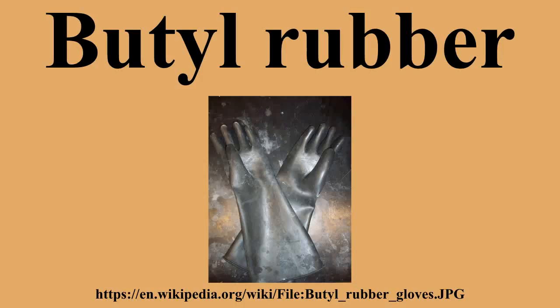Butyl rubber is a synthetic rubber, a copolymer of isobutylene with isoprene. The abbreviation IIR stands for isobutylene-isoprene rubber. Polyisobutylene, also known as PIB or polyisobutene-N, is the homopolymer of isobutylene, or 2-methyl-1-propene, on which butyl rubber is based. Butyl rubber is produced by polymerization of about 98% of isobutylene with about 2% of isoprene. Structurally, polyisobutylene resembles polypropylene, having two methyl groups substituted on every other carbon atom.